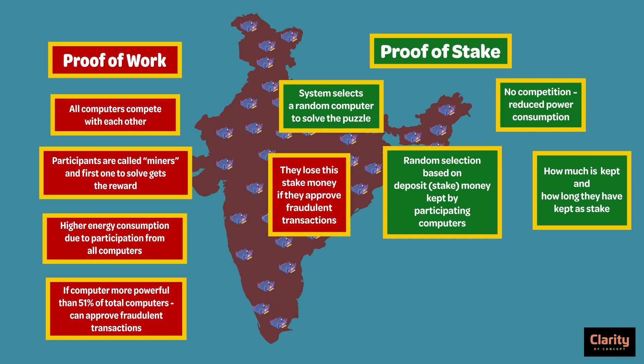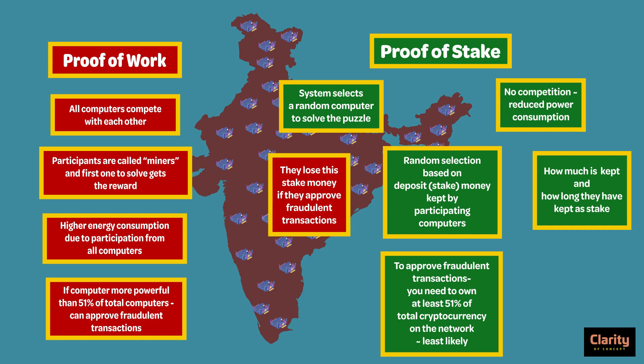Therefore, this method is called proof of stake. If you want to add a fraudulent block in this method, you need to own at least 51% of the total cryptocurrency on the network, which is very unlikely compared to the proof of work method. In proof of work, everybody competes and the winner earns a reward — they are all called miners. In proof of stake, they simply validate a block after the task has been assigned to them — they are called validators.